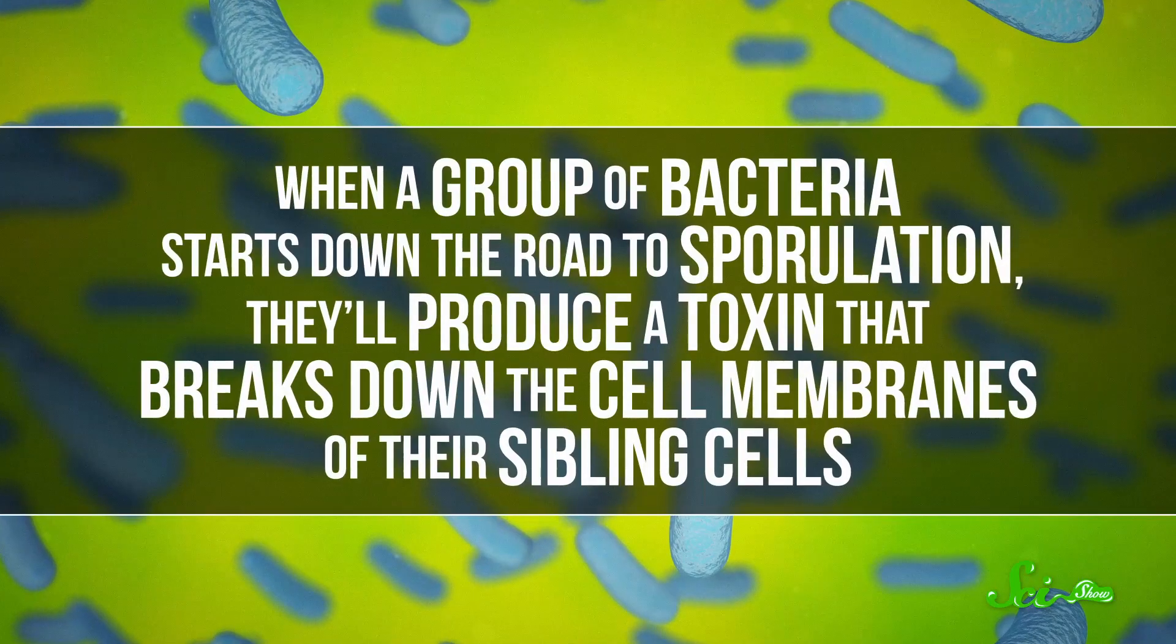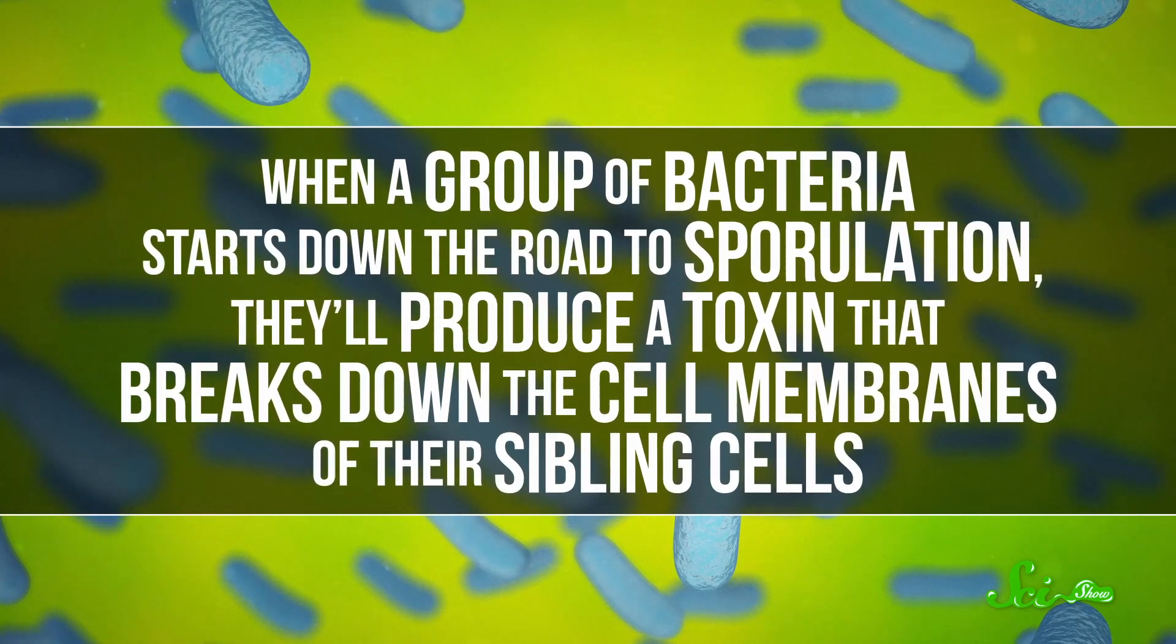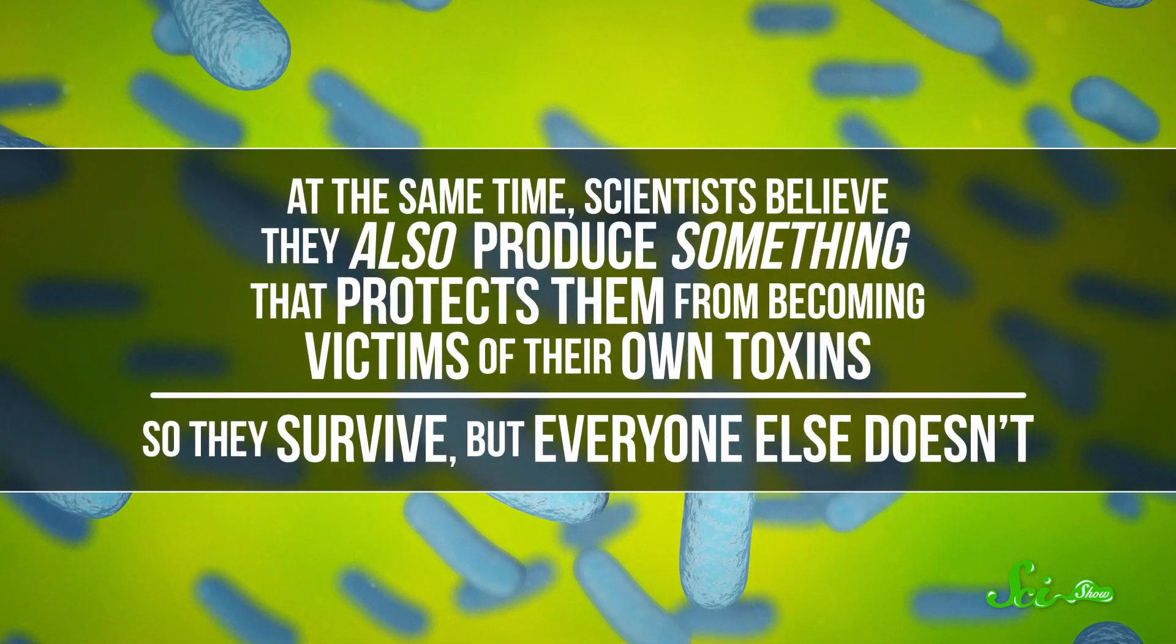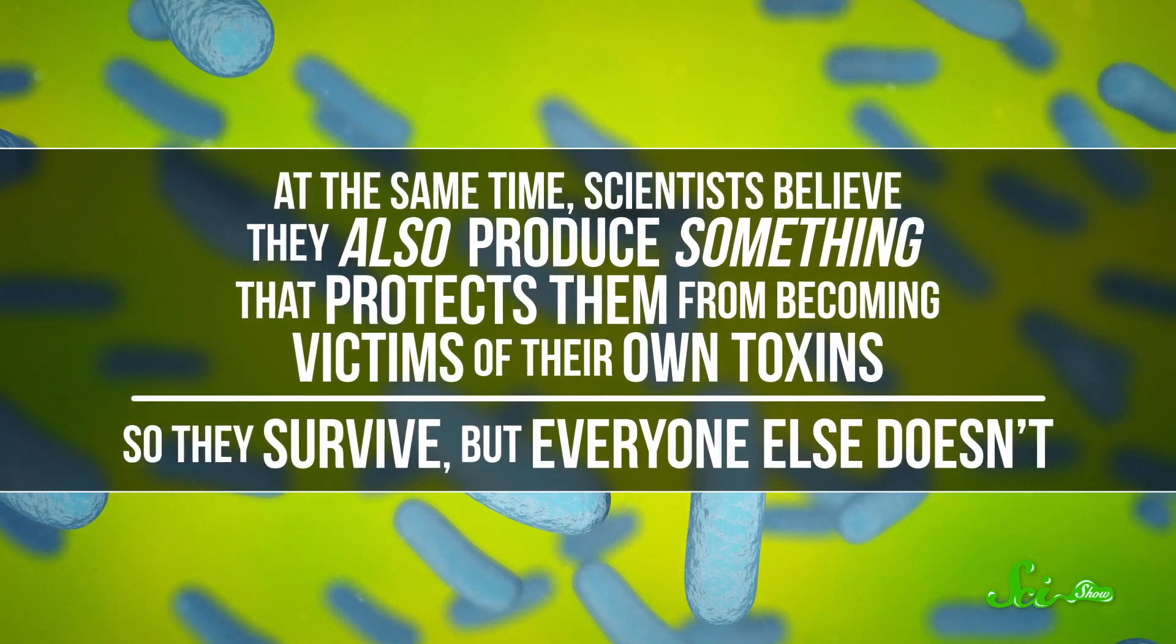But that process requires a lot of time and energy, so B. subtilis tries to avoid doing it. And one way it does that is by eating its buddies. When a group of bacteria starts down the road to sporulation, they'll produce a toxin that breaks down the cell membranes of their sibling cells. At the same time, scientists believe they also produce something that protects them from becoming victims of their own toxins. So they survive, but everyone else doesn't.